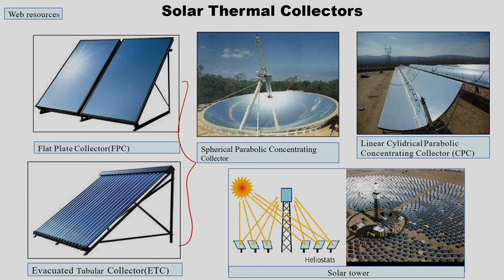For concentrating collectors, there are two main categories: point concentration and line concentration. The linear cylindrical parabolic concentrating collectors come under line concentration, and solar tower comes under point concentrating. The heliostats are kept to reflect the sun's radiation to a point, while the cylindrical parabolic shape reflects solar radiation to the absorber tubes which are linear throughout the cylindrical parabolic shape reflector.